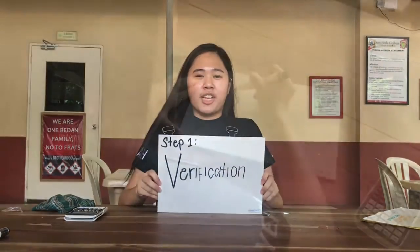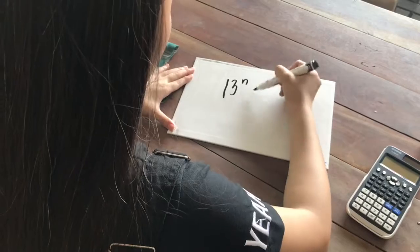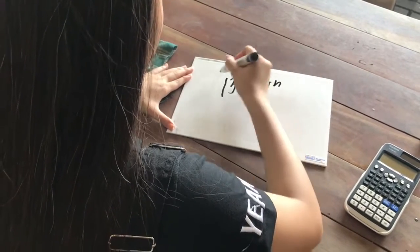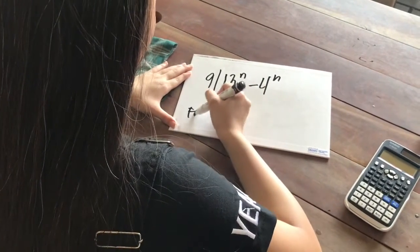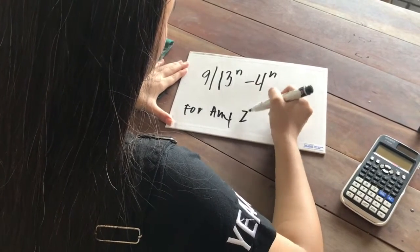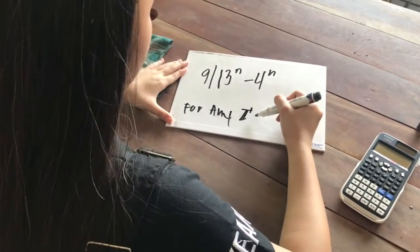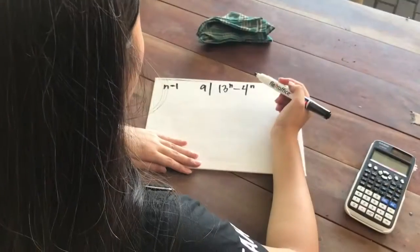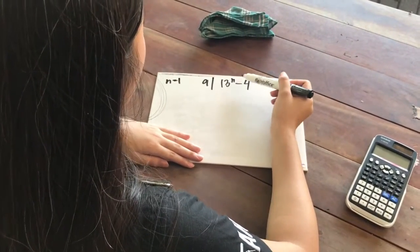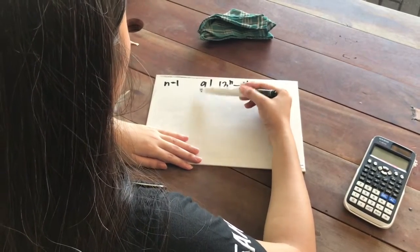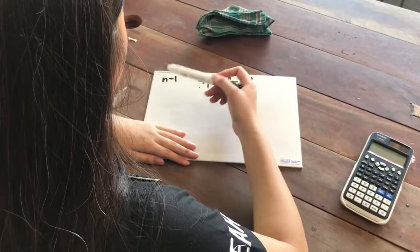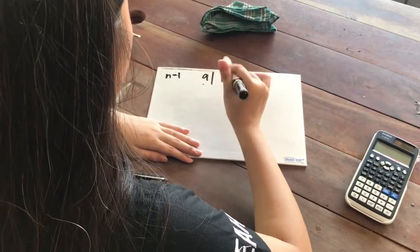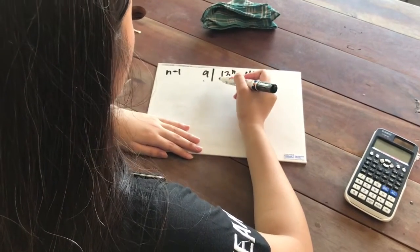Hello, I'm Ginzelens and I'm going to talk about the first step in mathematical induction, which is to verify that 13 raised to n minus 4 raised to n is divisible by 9 for any integer with n greater or equal to 1. We're going to substitute n equals 1 into the equation.